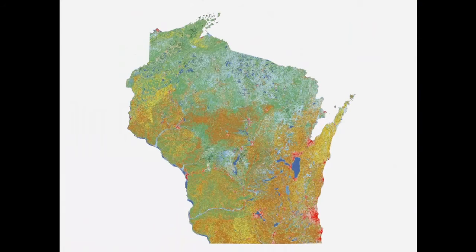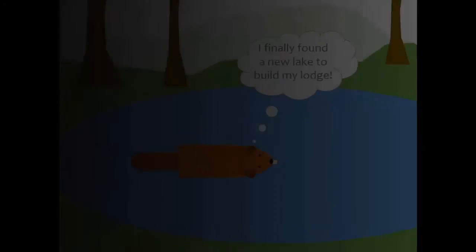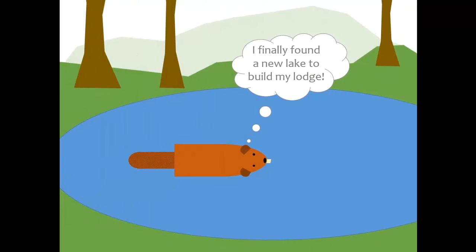By now you might be wondering how we get invasive species in Wisconsin. Well, usually invasive species move just like other species. They move through emigration, like this beaver looking for some new territory.